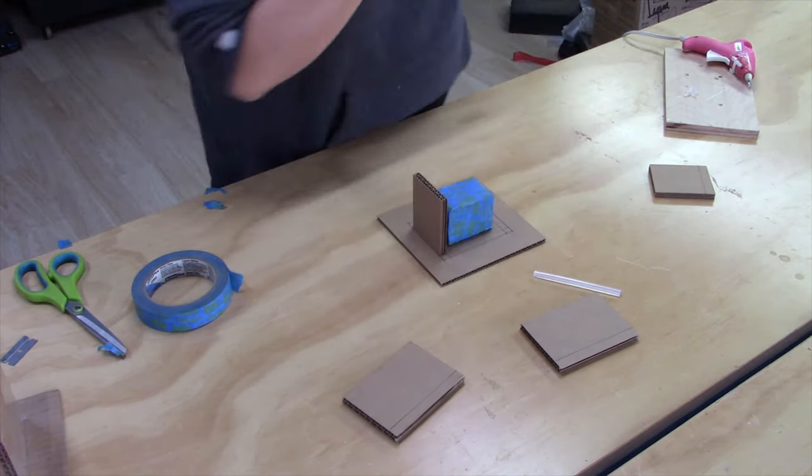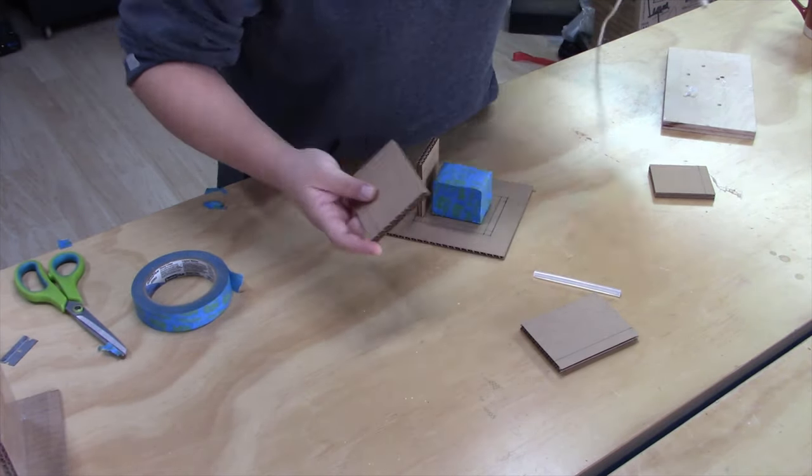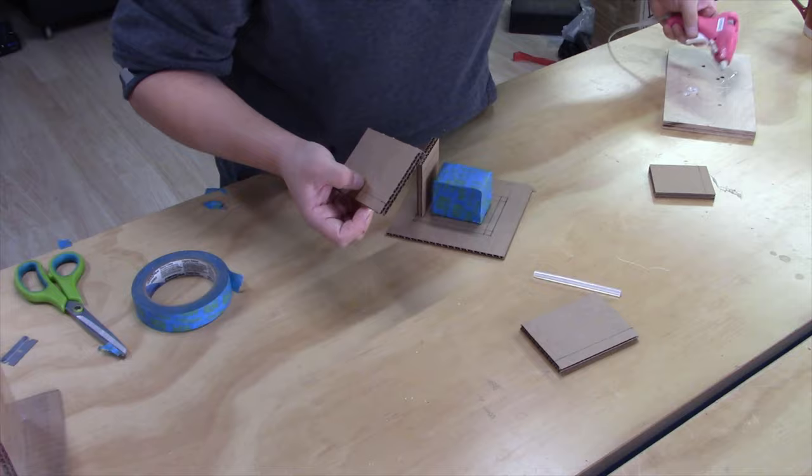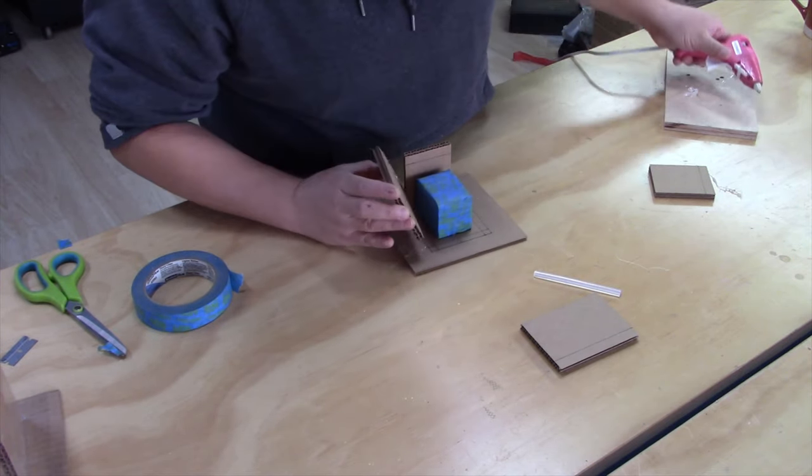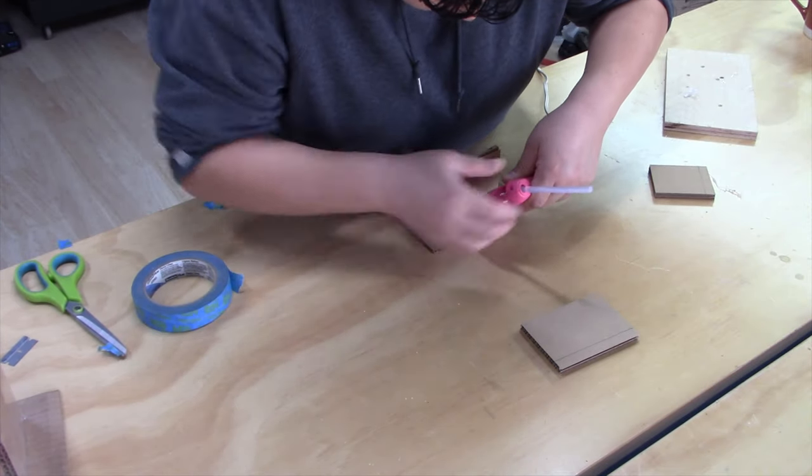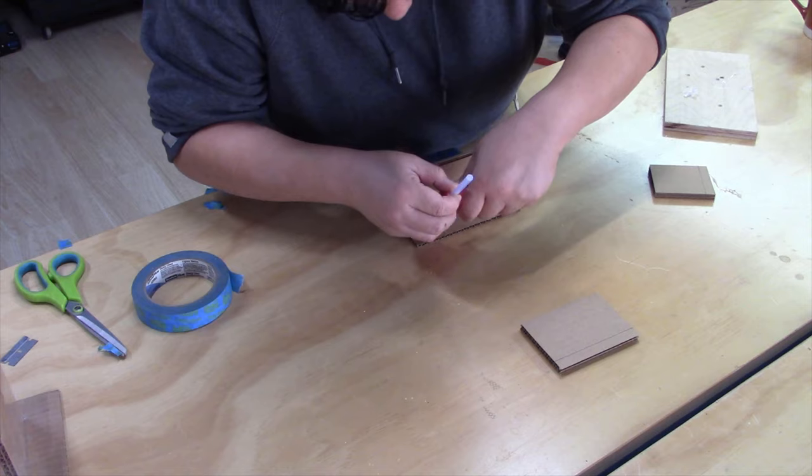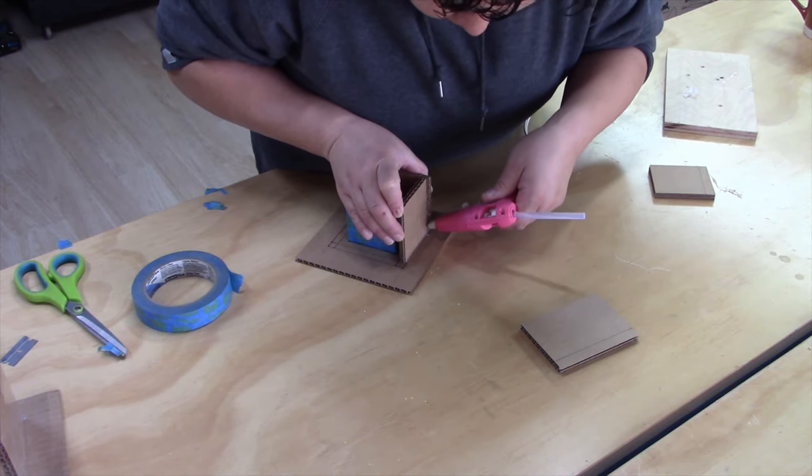To add extra support I can always come in on the outside. Run a little bit on the inside here where the two meet. Running this bead of hot glue all around the outside edge and up the inside edges, that's going to prevent my leakage.